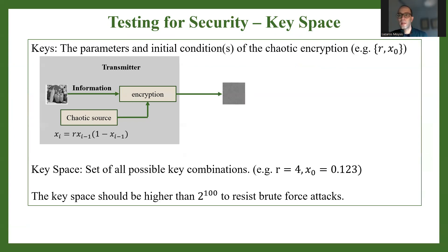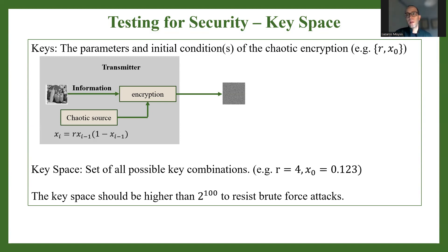These settings are used to perform the above two steps. So the keyspace is the set of all possible key combinations. The parameter r and the initial condition are called the keys of the system — the keys of the chaotic map — and essentially they are the keys of the whole encryption process.